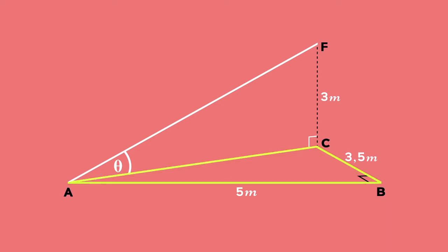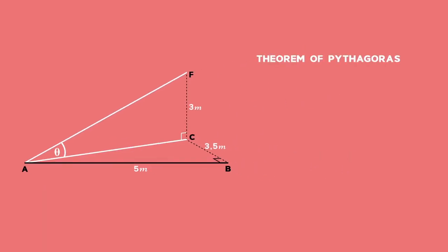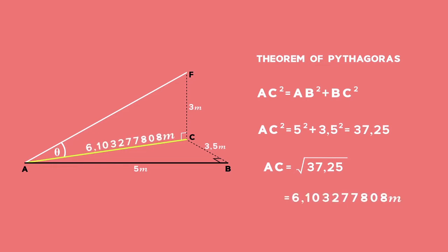Since ABC is a right angle triangle, we can use the theorem of Pythagoras to calculate the side AC. AC squared is equal to AB squared plus BC squared, substituting values for AB and BC as 5 and 3.5 respectively. We get AC squared equals 37.25. To find the length of AC, square root both sides of the equation and use your calculator to get AC equals 6.103 and so on, but do not round off just yet.